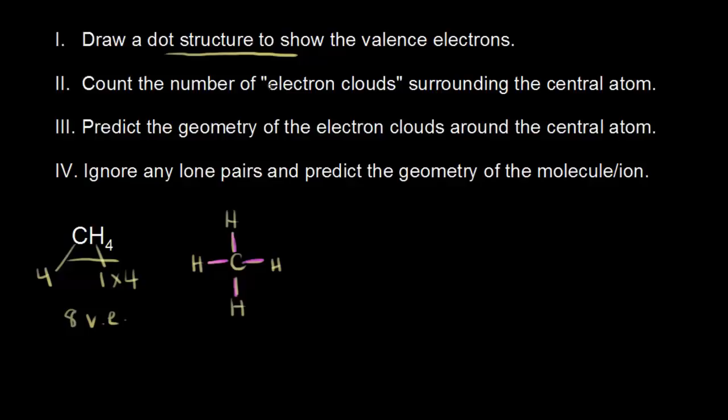The next thing we need to do is count the number of electron clouds that surround our central atom. Electron clouds are regions of electron density. We can think about these bonding electrons here as being an electron cloud — so that's one electron cloud. Here's another one, here's another one, and then finally here's another one. So we have 4 electron clouds surrounding our central atom.